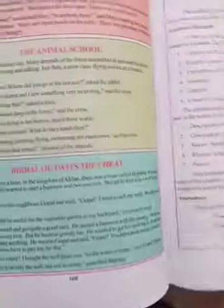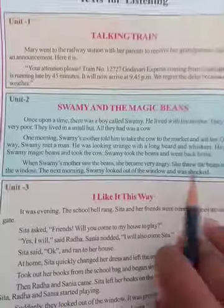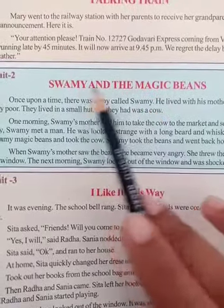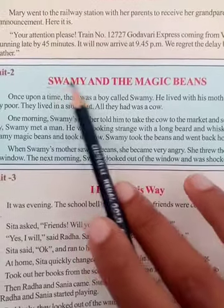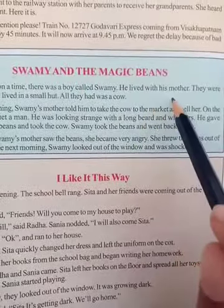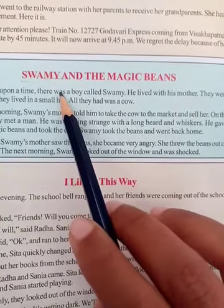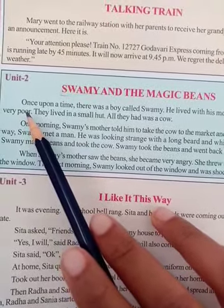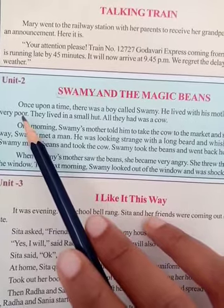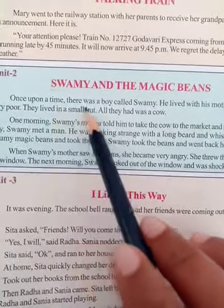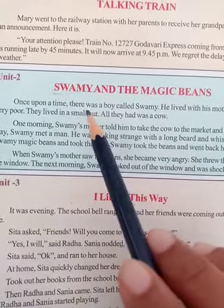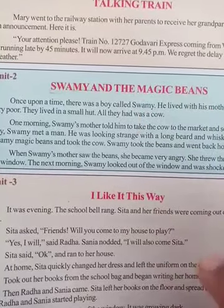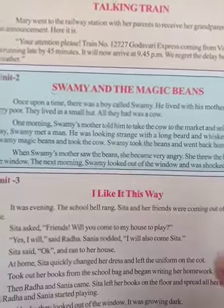Open page number 106 - here we have unit 2, Swami and the Magic Beans. Once upon a time there was a boy called Swami. Who is Swami? Swami is a boy who lived with his mother. They were very poor - people who don't have money. They lived in a small hut. All they had was a cow.